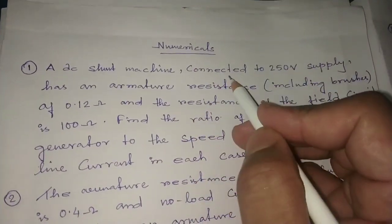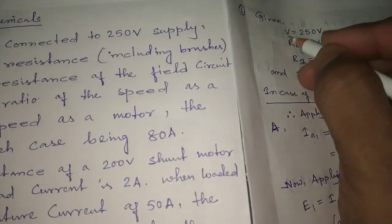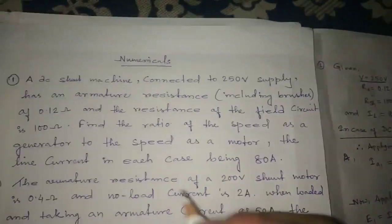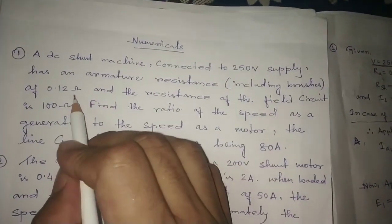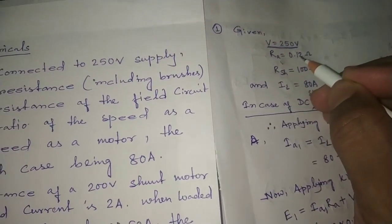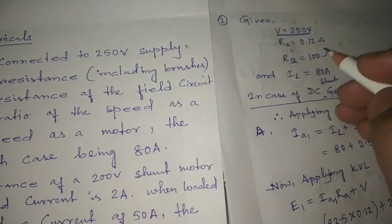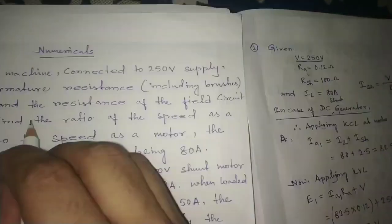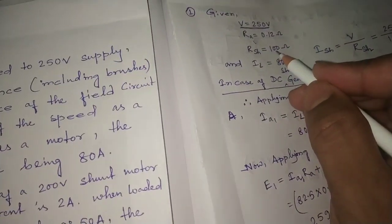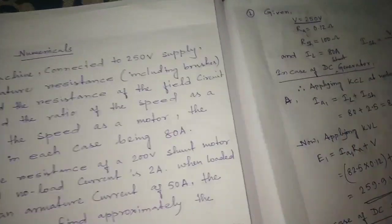The given data: supply voltage V is 250 volts. Armature resistance Ra is 0.12 ohm. Field resistance is 100 ohm. And the line current in each case is 80 amperes.